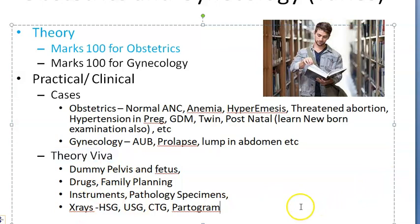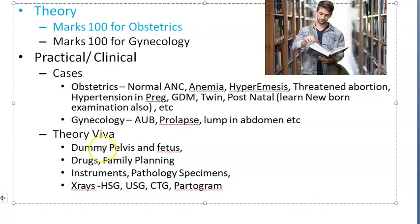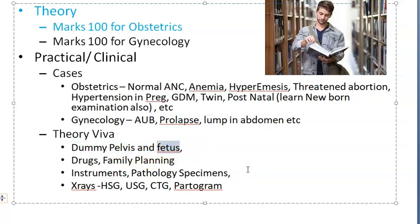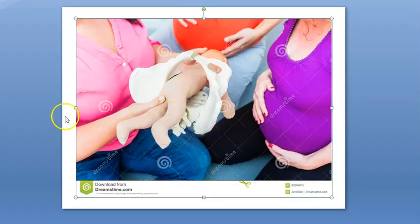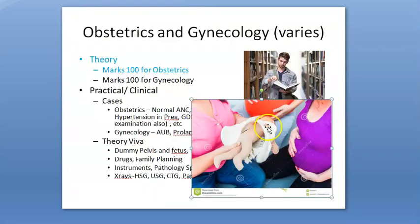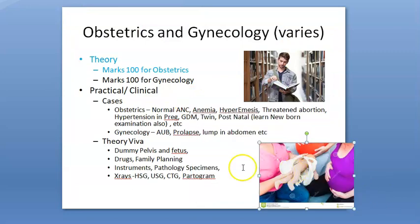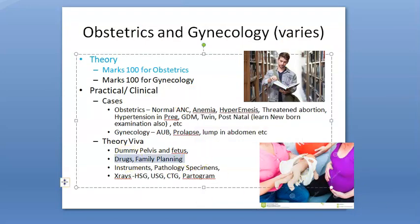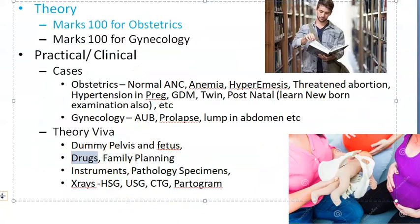In theory viva, which gets added to your theory marks, they can give you a dummy pelvis and fetus. They will ask you to hold the pelvis in an anatomical position and take the baby through in left occipital anterior position - the mechanism of normal delivery. They can also ask you to demonstrate a breech delivery, where you'll have to show the delivery of the baby.